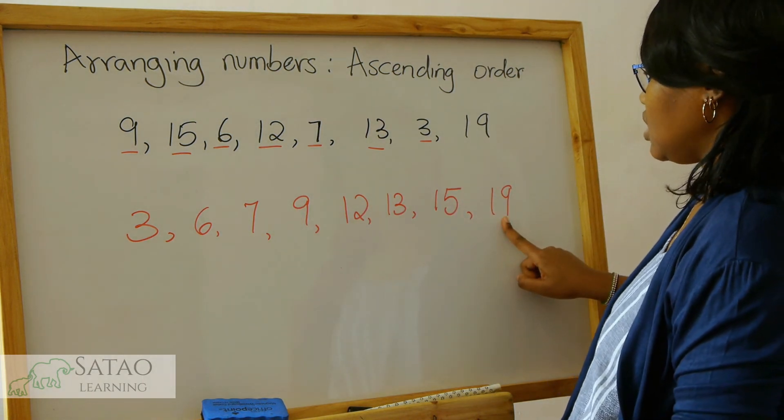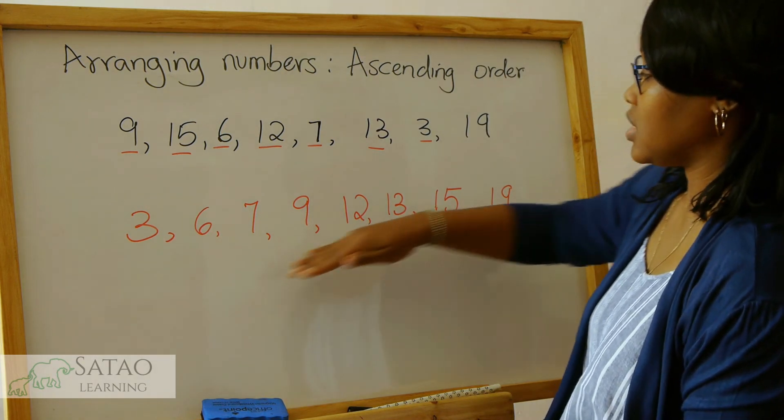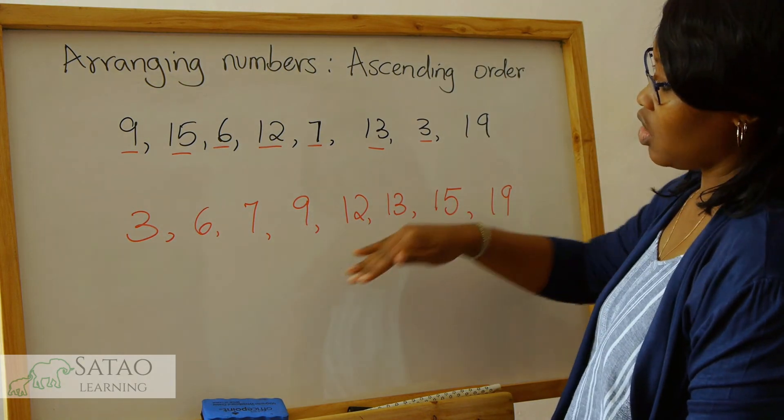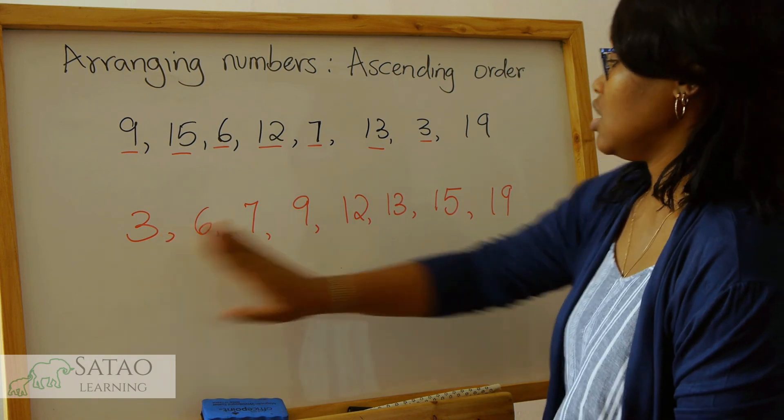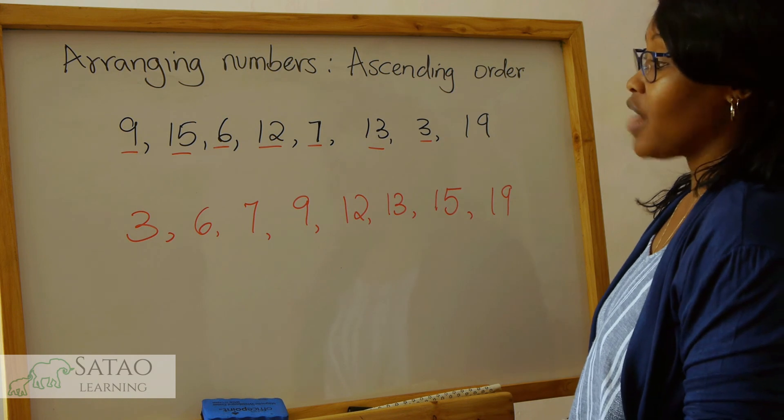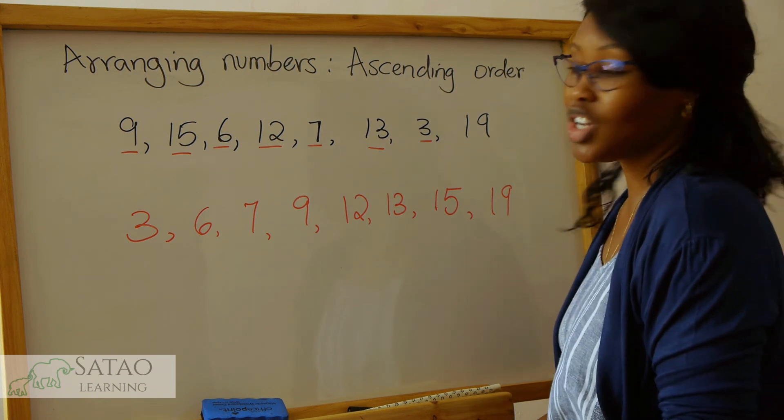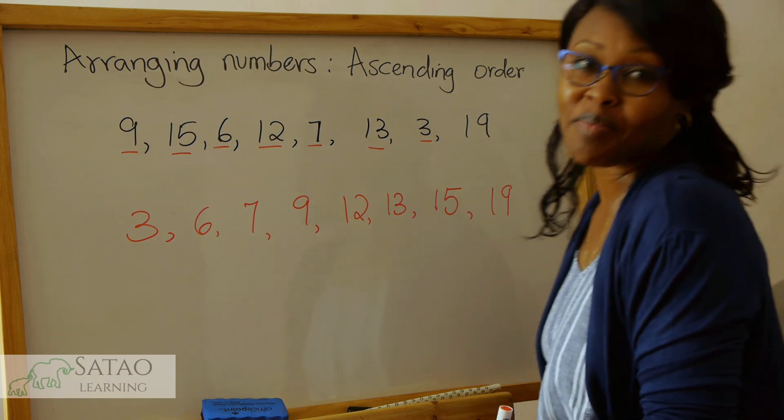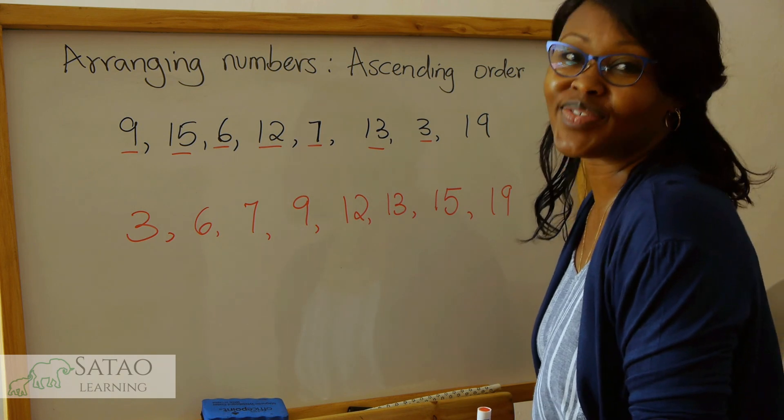And 19 is the biggest, so they are going in ascending order. Ascending order means from the smallest to the biggest. You can come up with your own numbers and try arranging them in ascending order. Thank you very much for watching and have a wonderful day.